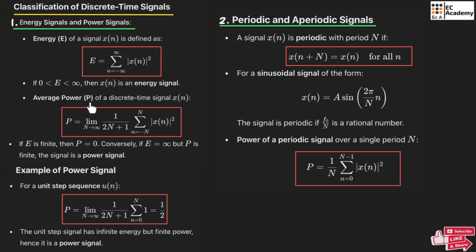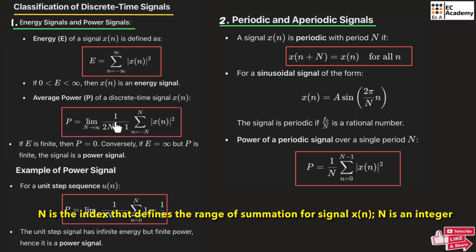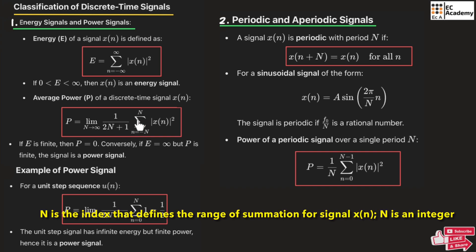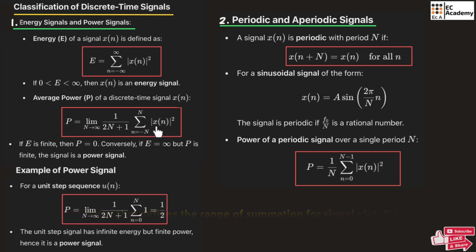We can find the average power of a discrete time signal x of n using the formula: P is equal to the limit as N tends to infinity of 1 by 2N plus 1, times the summation of n from minus N to N of the magnitude of x of n squared. These two formulas you need to remember to find the energy and the power of the signal.